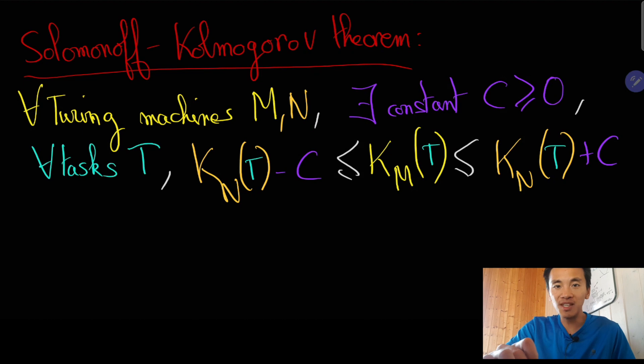Moreover, the value of C will be very reasonable in practice for any basic Turing machines M and N. In fact, it will be essentially the length of a compiler that transforms executable codes for machine M into executable codes for machine N and vice versa.